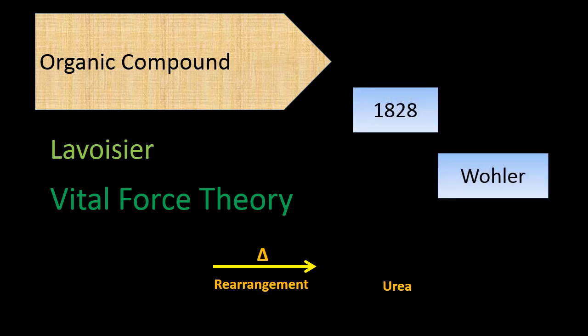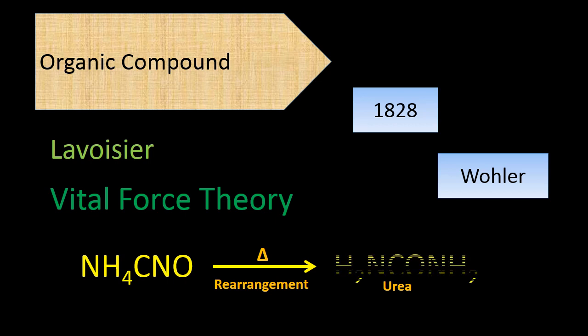Then in 1828 it was Wöhler who firstly prepared urea from ammonium cyanate by a heating process, and that was the first organic compound named urea prepared in a laboratory. After that the series continued — acetic acid was prepared in the laboratory and many other organic compounds followed. That was something about the history of organic compounds.